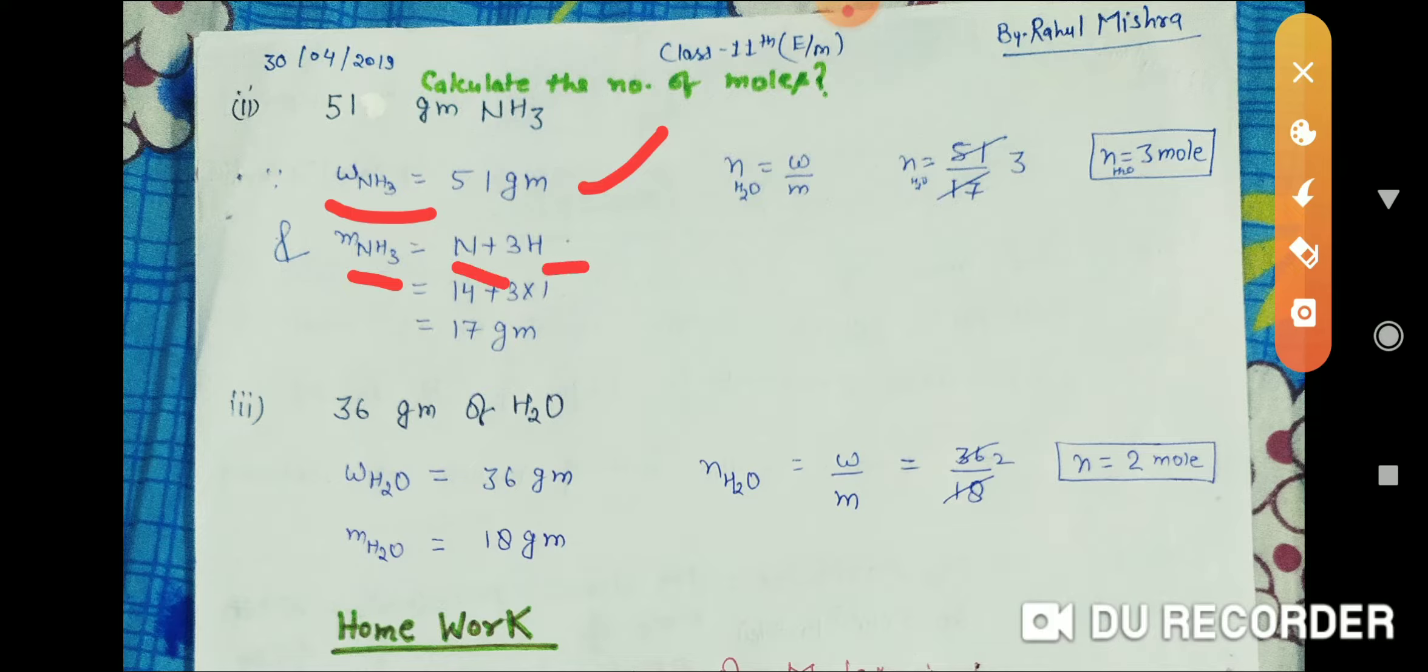...of nitrogen plus 3 times the atomic mass of hydrogen. The atomic mass of nitrogen is 14, and 3 times the atomic mass of hydrogen is 3 times 1. On calculating, it equals 17.